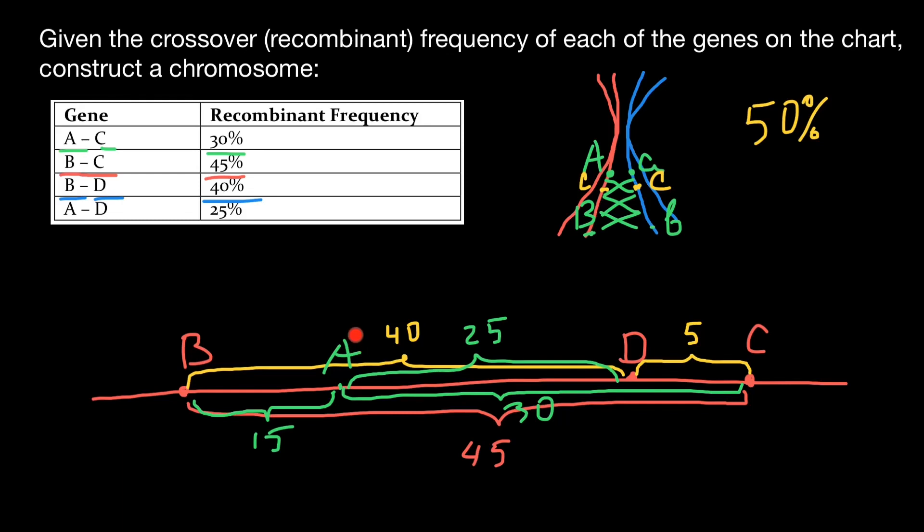We cannot place no gene A, no D anywhere outside, because we would exceed this number of crossing over frequencies between genes. So we can put them only inside. We can place gene D and A only in these places. So this is going to be the order of genes on this chromosome.